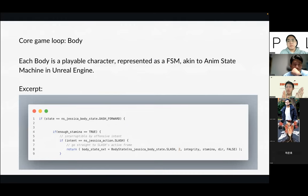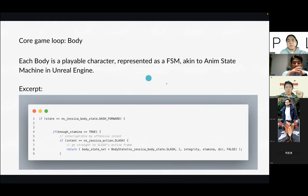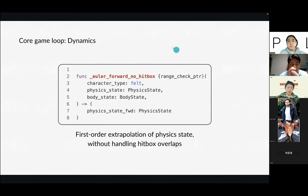After the perceptibles and mind, you have the body. The mind produces intent — what it wants to do — and this intent influences the body. The body is also modeled by a finite state machine, which is a convention in the game industry where animation systems are controlled by finite state machines. Then we have dynamics, which is our way of describing physics — we have functions written in Cairo that simulate how these rigid bodies move around, interact, and collide. We do only first-order approximations, because in video games you don't have to be super scientifically precise.